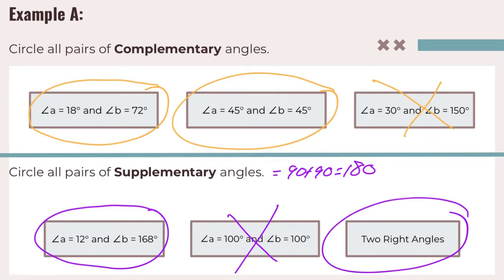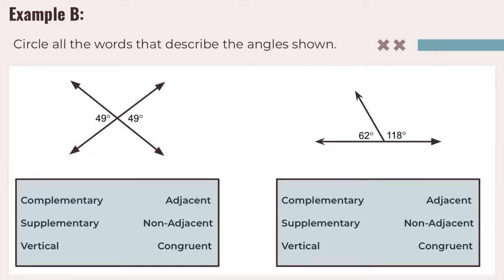Now let's continue looking at relationships with Example B, which asks us to circle all the words that describe the angles shown. On the left-hand side, we check: complementary — do they add up to 90? 49 plus 49 is 98, so no. Supplementary — 98 doesn't equal 180, so no. Vertical — are they across from each other? Yes, they are vertical angles. Adjacent — do they share a side? They share the vertex in the middle but not a side, so they are non-adjacent.